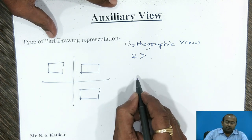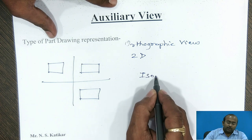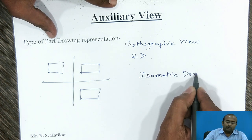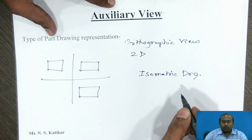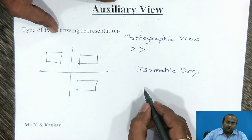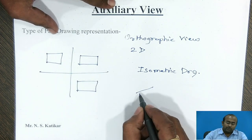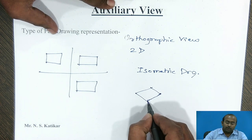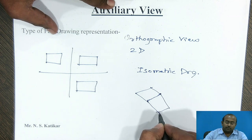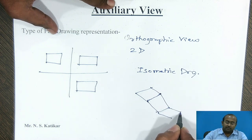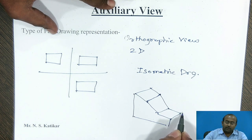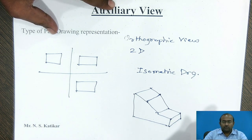The second method we had come across is isometric drawing. The isometric drawing or isometric view representation is nothing but representing the part geometry in 2 and half D manner. Even though we are visualizing the part in a 3D sense, we are calling it as the isometric 2 and half D drawing.